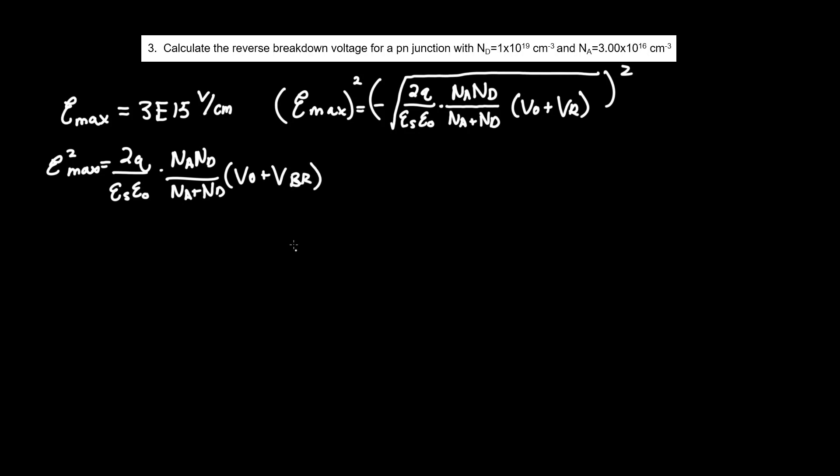Now our goal is to isolate VBR. At first, let's multiply epsilon S epsilon naught and divide by 2Q. That's the most straightforward way of doing it. So if we multiply both sides, the epsilons will be in the numerator. And dividing both sides by 2Q, the 2Q will be in the denominator. All of this equals the remainder: NA ND over NA plus ND times V0 plus VBR.